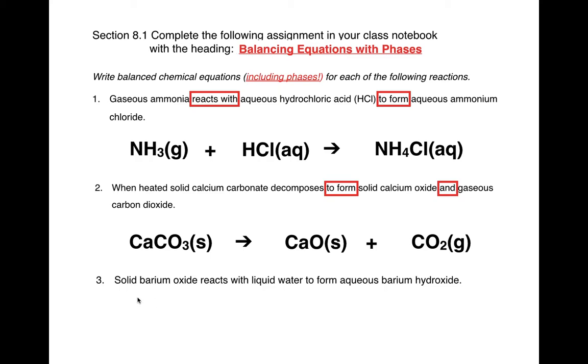Let's balance this one really fast. We've got calcium - one of those, one of those, so that's good. I'm going to go to carbon next because oxygen is all over the place. So I have one carbon and one carbon. And oxygen - three oxygens here. One oxygen plus the two here gives me three on this side, which balances the three on that side. So that one's good.